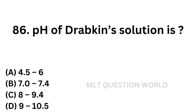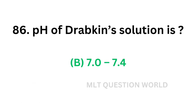Question number 86: pH of Drabkin's solution is. Option A: 4.5 to 6. Option B: 7 to 7.4. Option C: 8 to 9.4. Option D: 9 to 10.5. The correct answer is Option B, 7 to 7.4. Drabkin's solution is used in hemoglobin estimation.